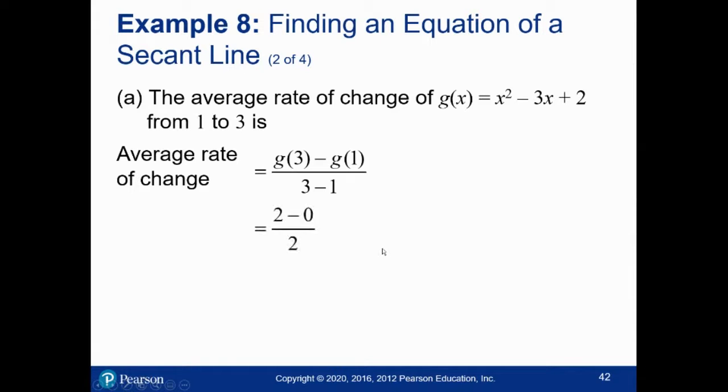G of 3 minus G of 1 over 3 minus 1. Well, if you compute G of 3, you should get 2. If you compute G of 1, you should get 0. 2 minus 0 over 2 is just 1. So the average rate of change is 1.